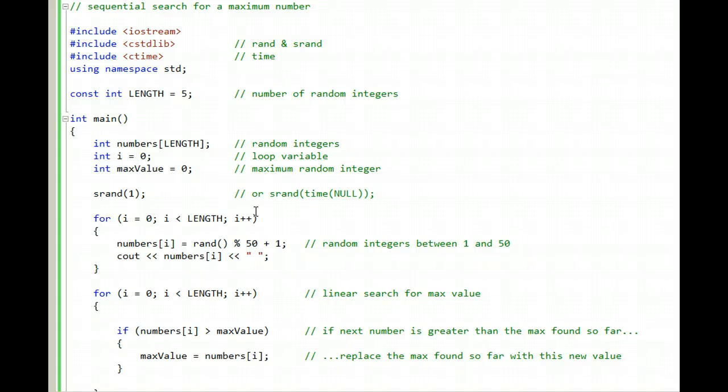In this demo program, we again use a sequential search. In this case, we're searching through an array named numbers. Its length is 5, and it's being filled here with random integers between 1 and 50.